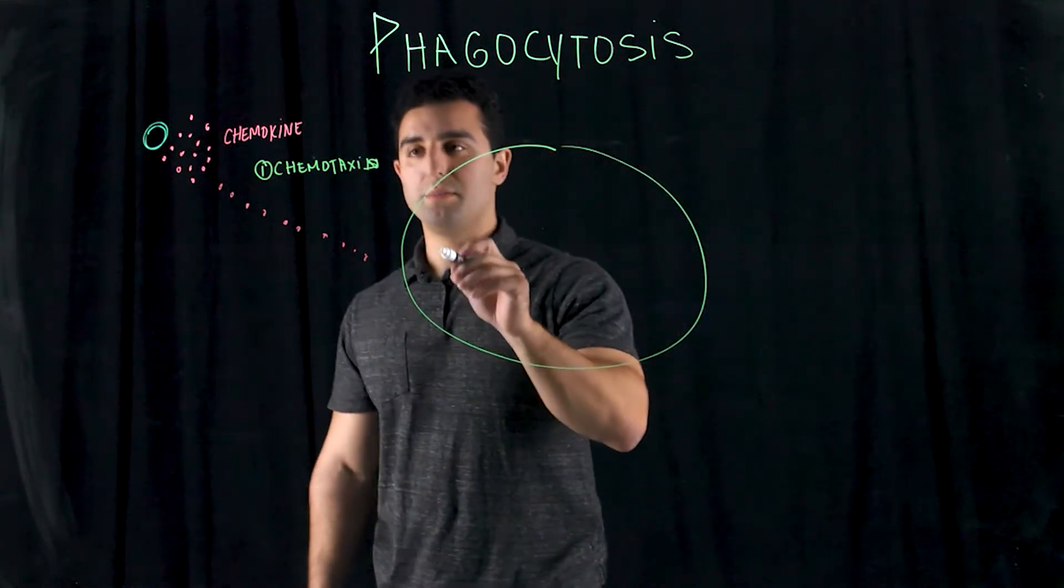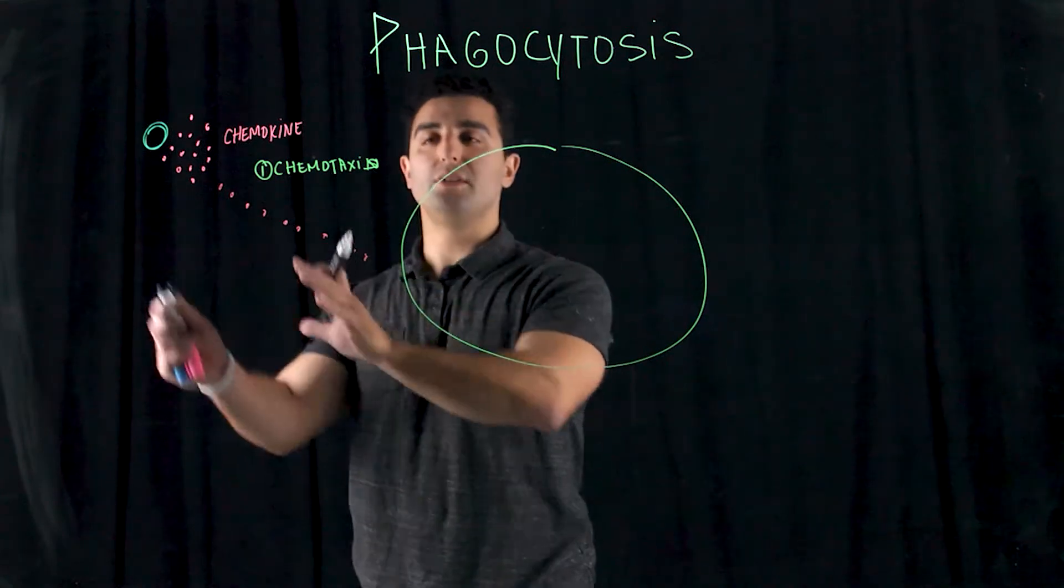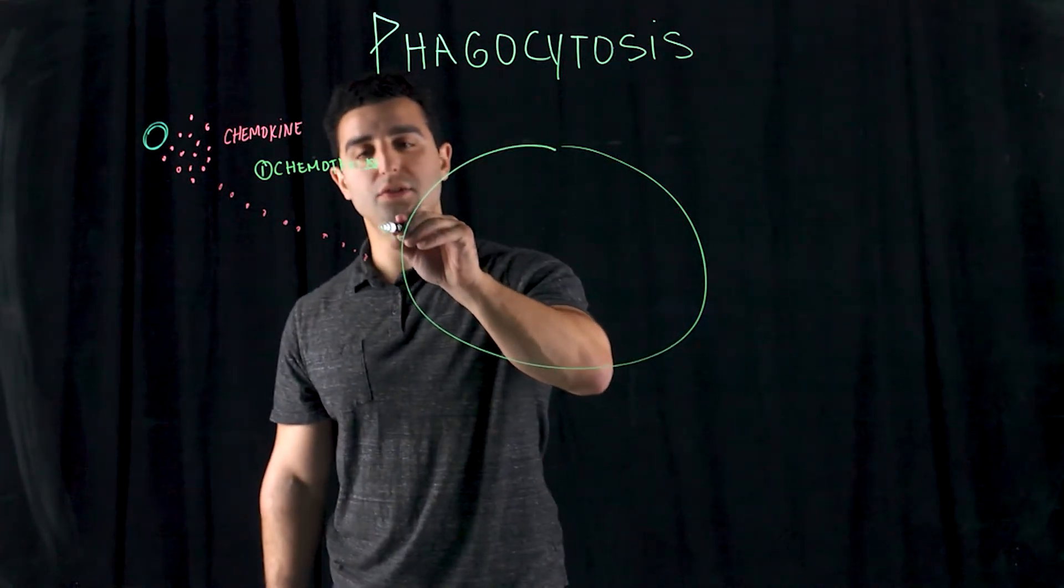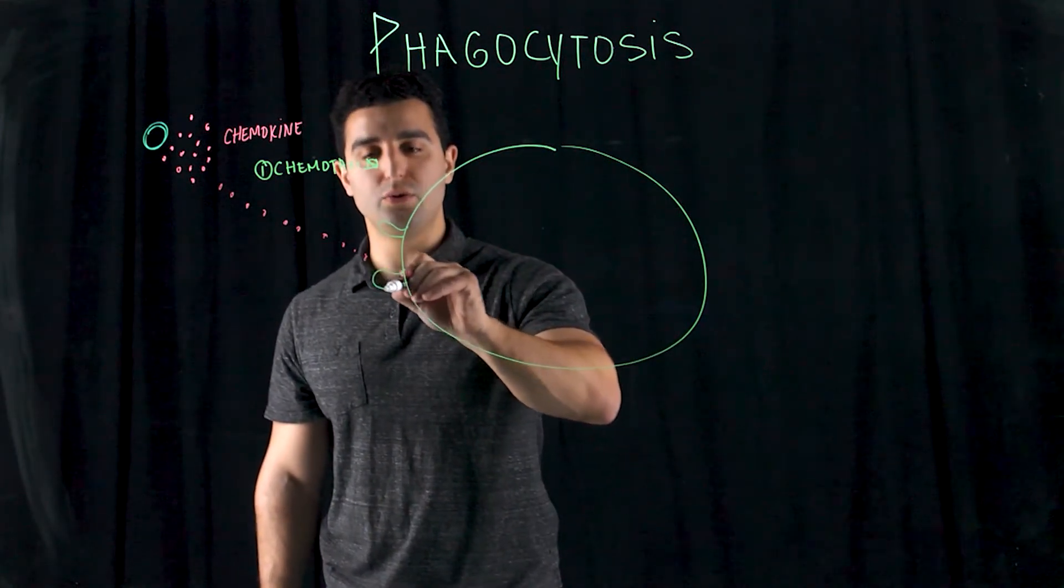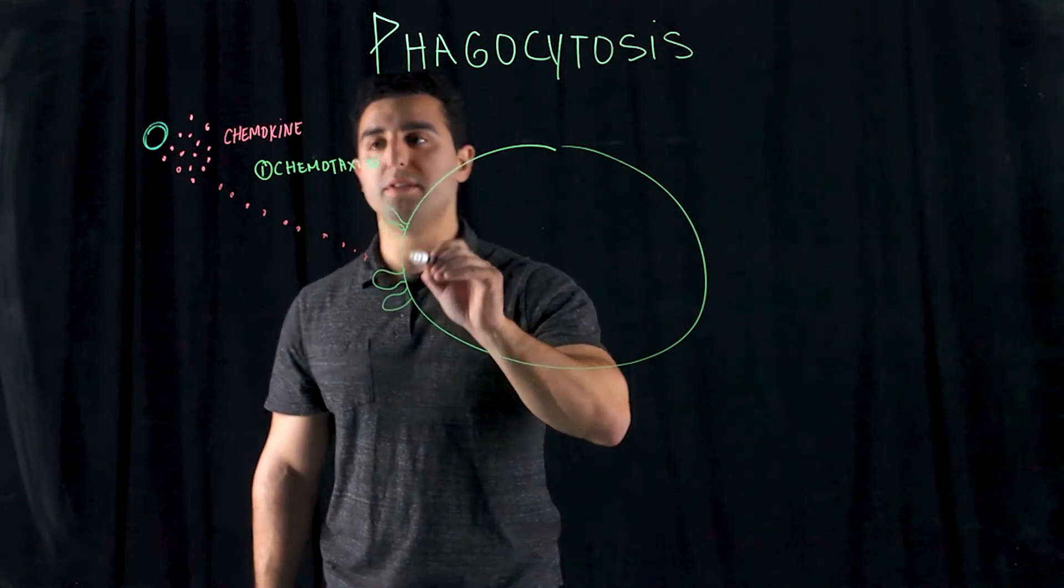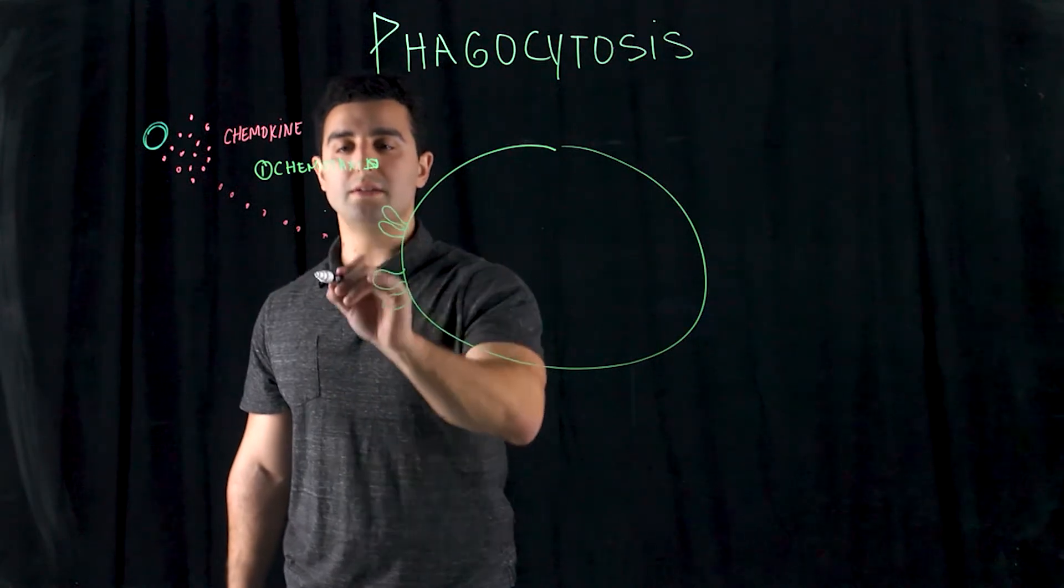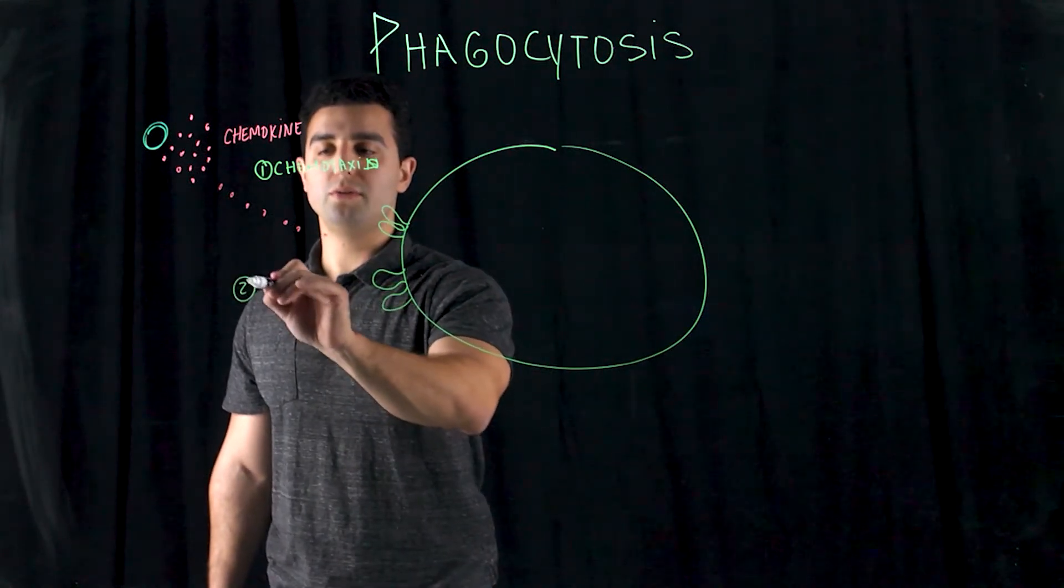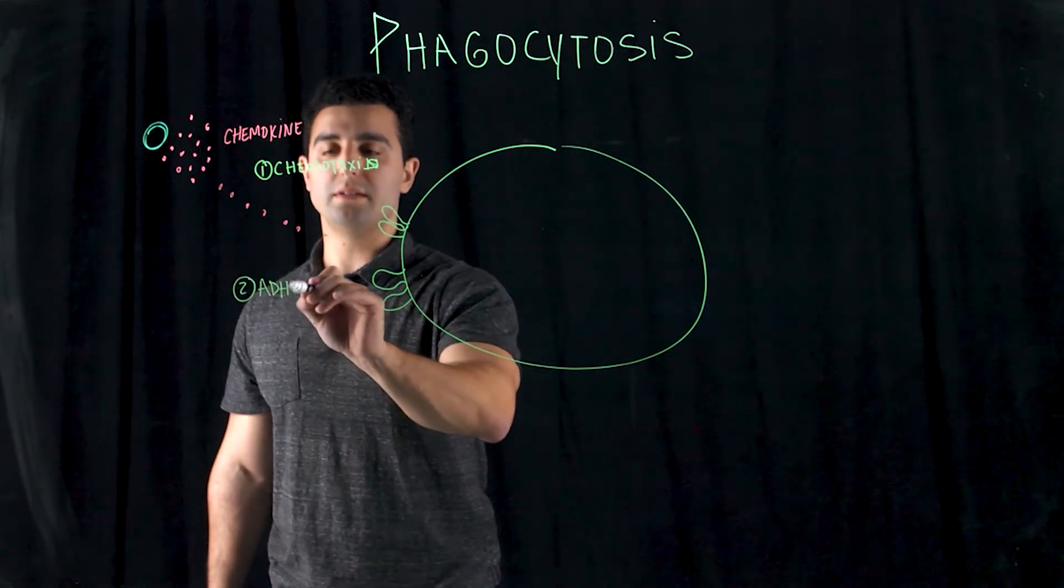Now, because it realizes as it arrives to the location, it begins to develop these pseudopods. Pseudopods are present in order for the second process to take place, which is called adherence. So you have number two, which is called adherence.